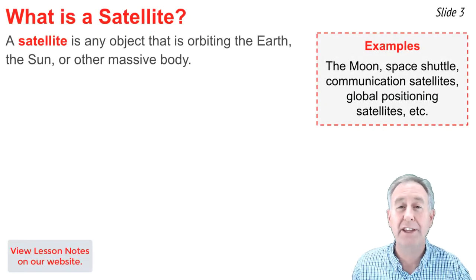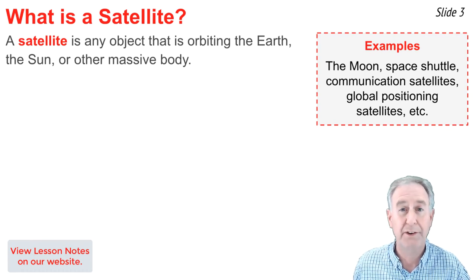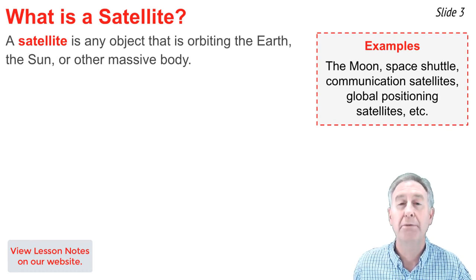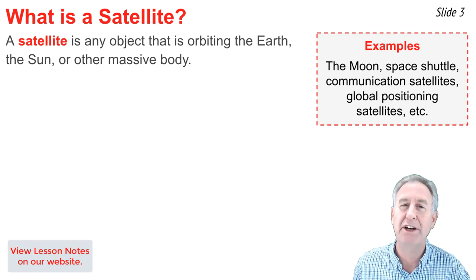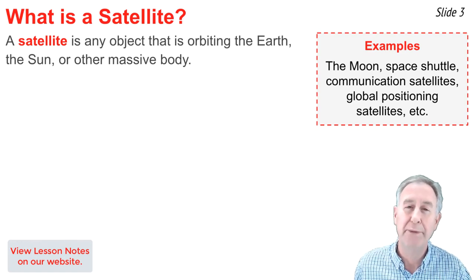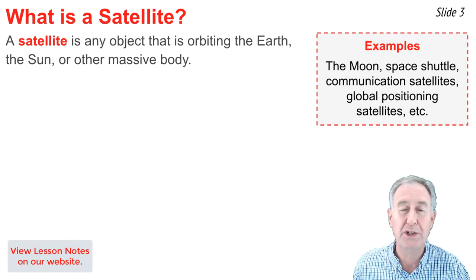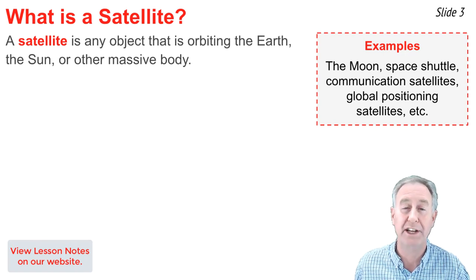A satellite is any object that is orbiting the Earth, the Sun, or other massive body. The planets and our Moon are examples of natural satellites. Human-made satellites include the Space Shuttle, Global Positioning Satellites, and Communication Satellites.